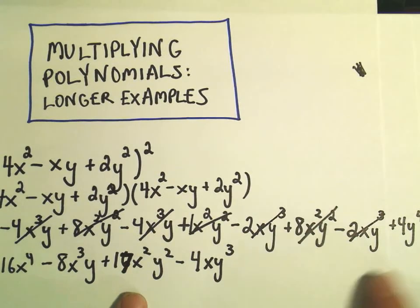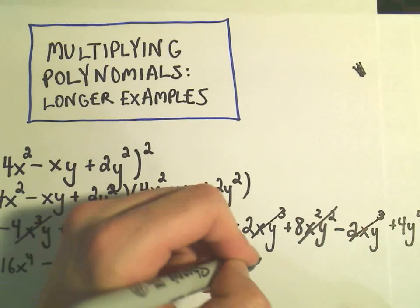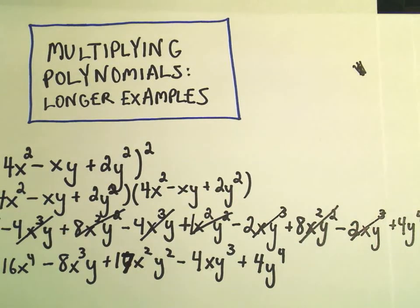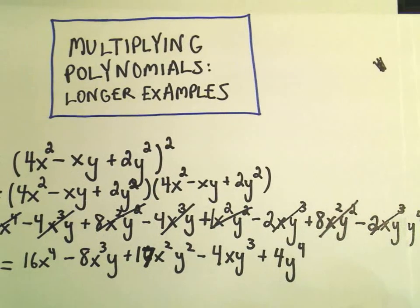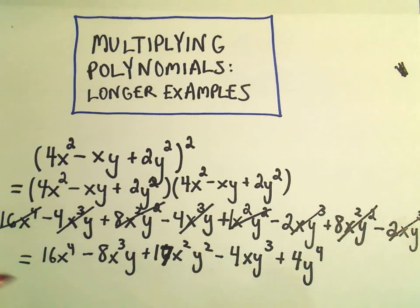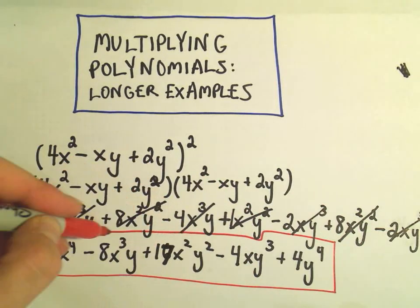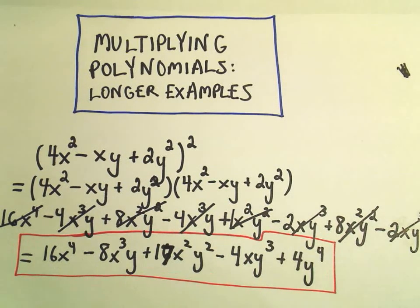And last but not least, it looks like we have a positive 4y to the fourth. So I think we have now multiplied out this polynomial in two variables. We have combined all of our like terms. And that would now be considered multiplied out and simplified.